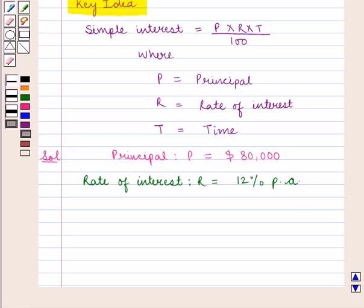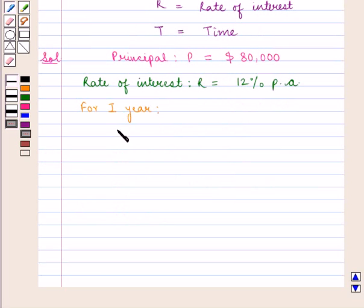So now, as we know, simple interest equals P times R times T divided by 100. Therefore, for the first year, interest will be equal to $80,000 times 12 times 1 divided by 100, which equals $9,600.